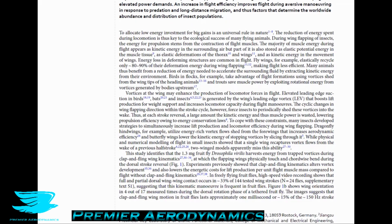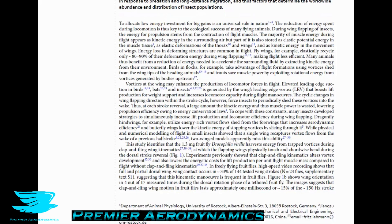Birds in flocks take advantage of flight formations using vortices shed from the wingtips of the leading animals, and trout save muscle power by exploiting rotational energy from vortices generated by bodies upstream. Similarly, ducks swim in V-formation to take advantage of vorticity from the lead animal, making their swimming more efficient. This phenomenon occurs across many different situations and species.